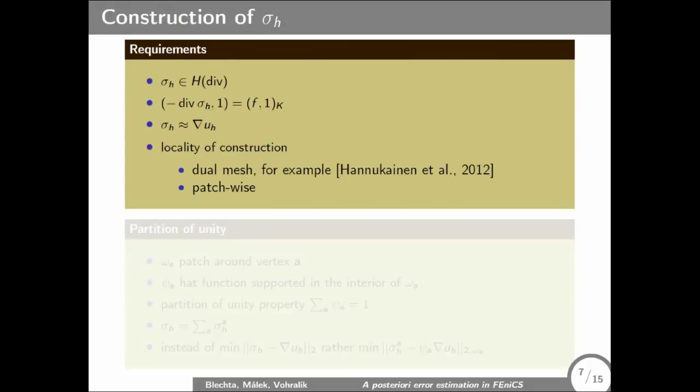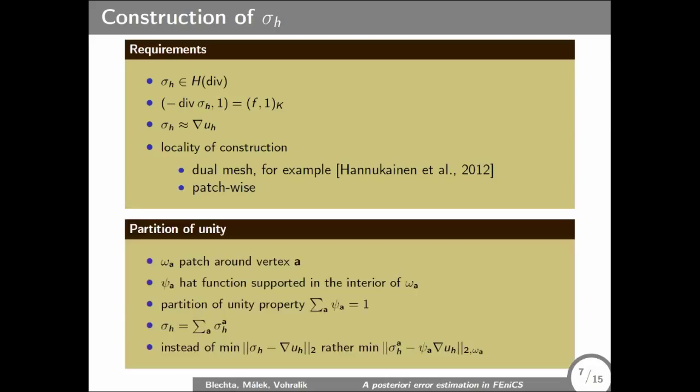So we would like to have equilibration. And we would like that sigma_h is close to the flux, because if it is close, then the estimate is good, it's efficient in some sense. And we would like to do it locally so that it's cheap. There is some dual mesh approach, but we will stick to patchwise. Patch is a set of cells with common vertex A.